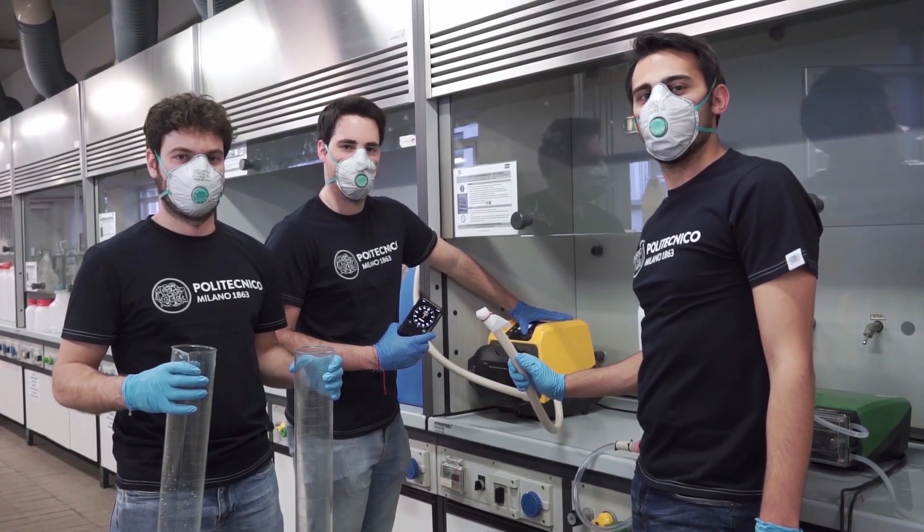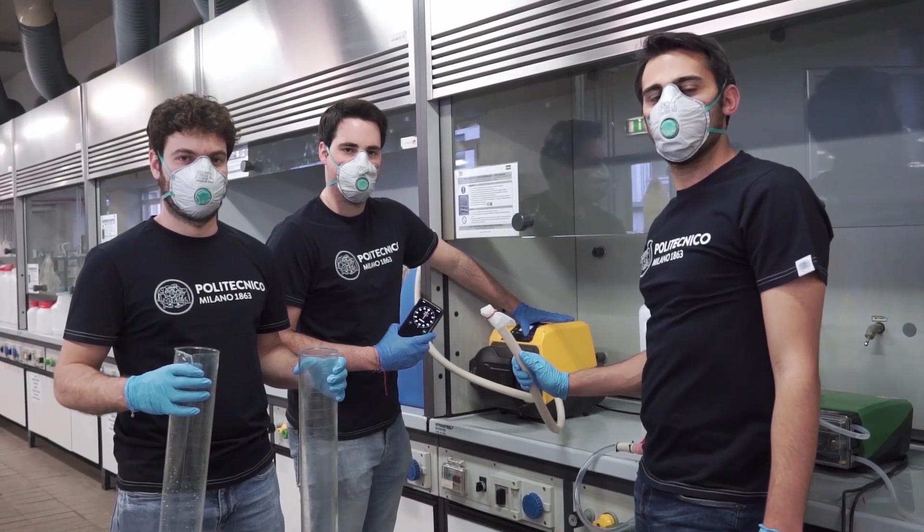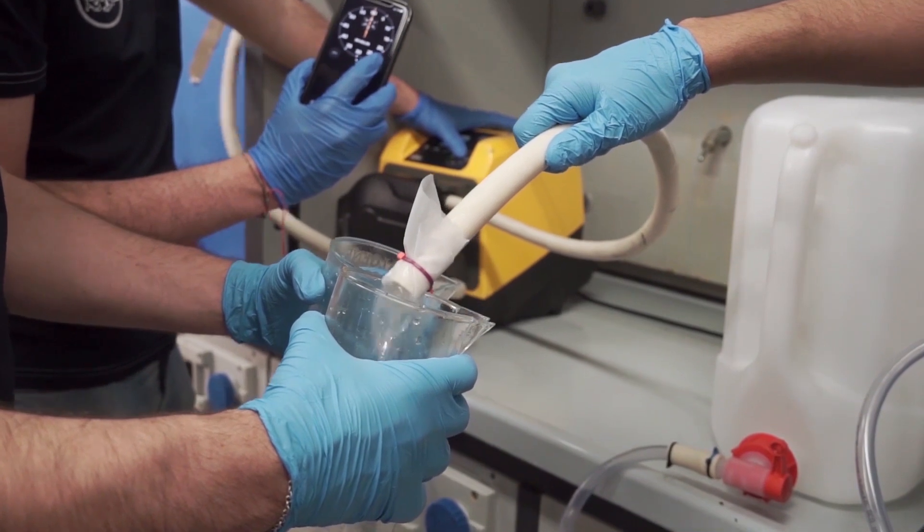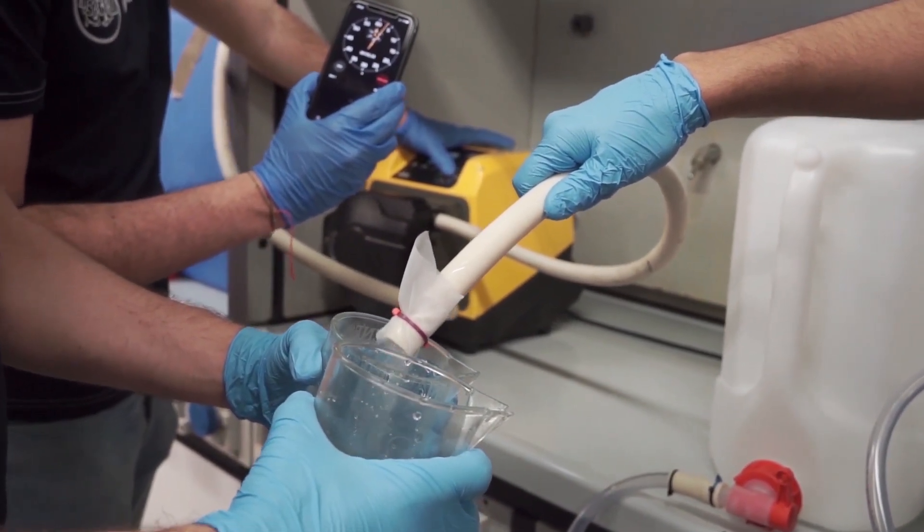Now, to proceed with the calibration, we will need at least three operators with two cylinders and one chronometer. At this point, proceed by measuring the volume you have in the cylinder during the time interval measured by the chronometer.